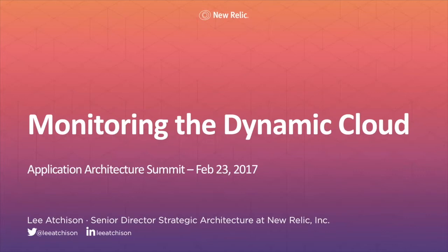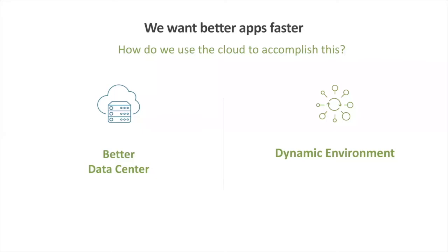It's absolutely great to be here, and I'm very glad to be part of the summit. We all want better apps, and we want to be able to build these apps faster than ever before. How can we use the cloud to accomplish this? There are two fundamental ways. The first is to use the cloud as a better data center. The second is to use the dynamic nature of the cloud to build better apps faster. I'm going to talk about each of these methods.